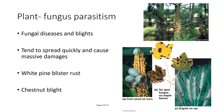White pine blister rust, found on our campus, keeps white pine from growing too large. Fungal diseases and blights are able to devastate crops and eliminate many plants. Every autumn, the first bit of powdery mildew appears on zucchini plants. It spreads during cool mornings and wet nights and takes out all cucurbits — cucumbers, pumpkins, acorn squash, and zucchini — effectively ending the growing season.